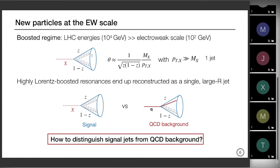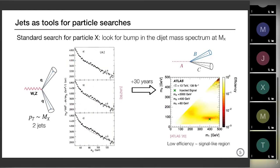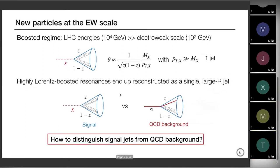Imagine a particle X decaying to gluons. The angle among these gluons can be computed to go as the mass of the resonance divided by pt. When the pt — roughly the energy of the collision — is way higher than the mass of your resonance, this angle is going to be very small. Therefore these decaying products cannot be resolved as two separate jets anymore, as they would be if pt were of the order of the mass. Rather, you reconstruct these decaying products as one single large-radius jet.